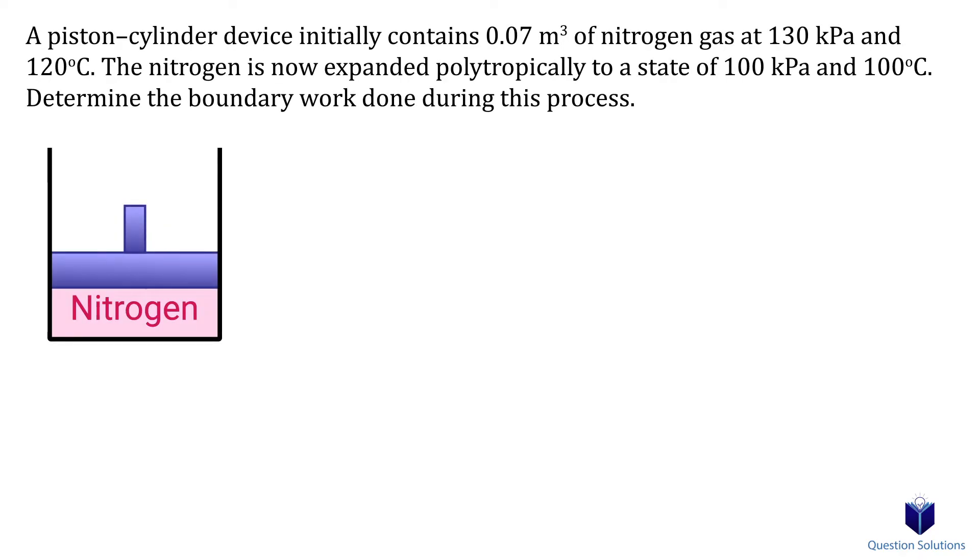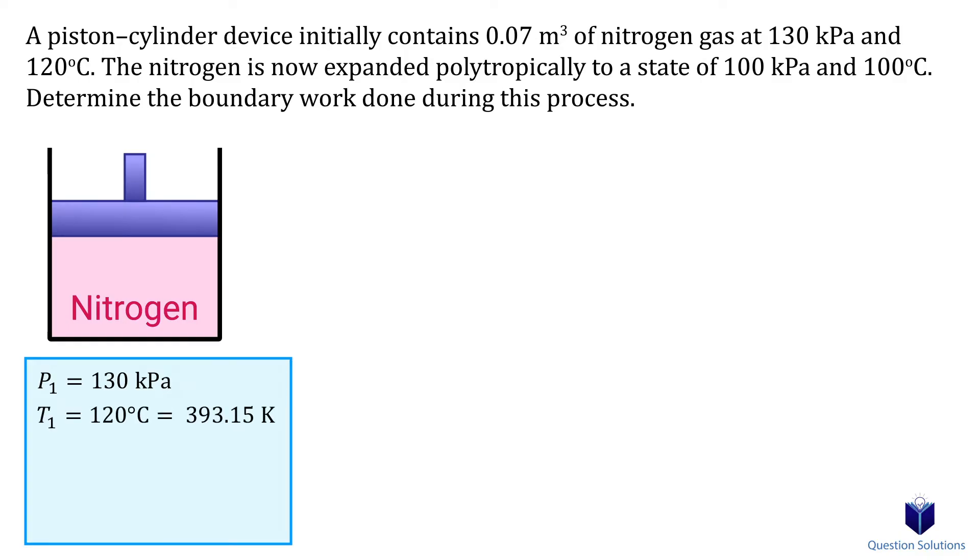In this question, we have a piston cylinder device with nitrogen gas. We need to find the boundary work done when the nitrogen expands through a polytropic process. First, let's write down what we know. The initial pressure is 130 kilopascals. The temperature is 120 degrees celsius, which is 393.15 kelvin. And the volume is 0.07 cubic meters. After the expansion, the pressure is 100 kilopascals. And the temperature is 100 degrees celsius, which is 373.15 kelvin.